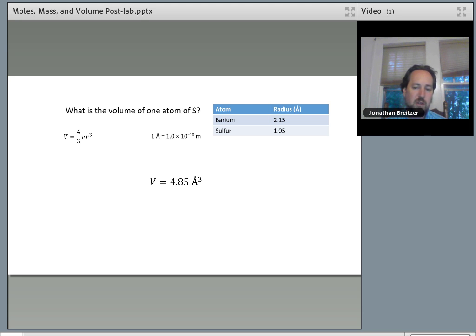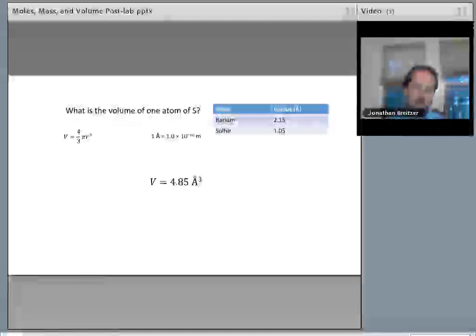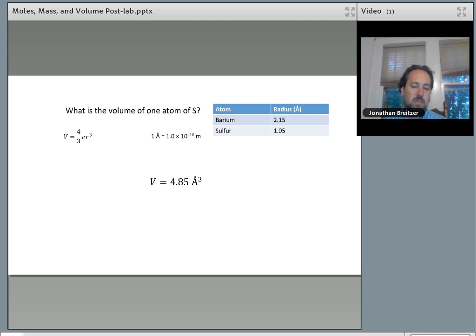Now some of the radii have two significant figures if they are less than one angstrom, so be sure you round to two in that case. Now just to be safe, I'm going to actually store that volume on my calculator, but I'll write it down as 4.85 angstroms cubed.